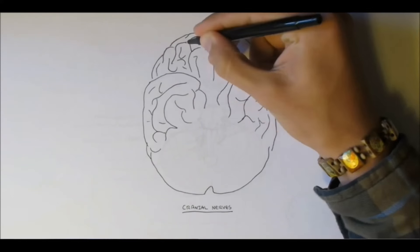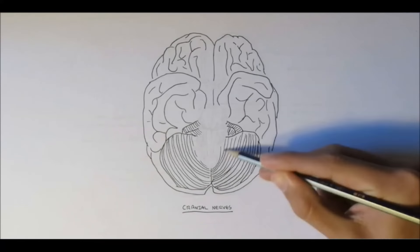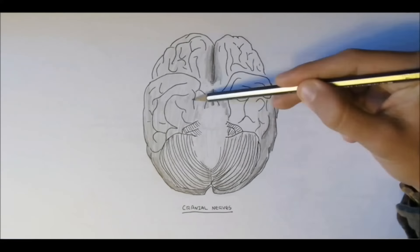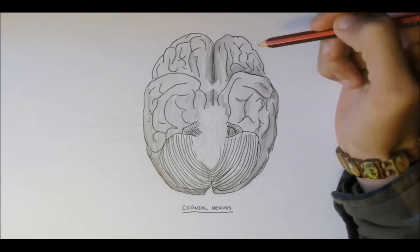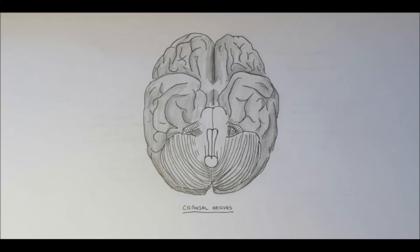So I'm going to draw out a brain, an inferior view of the brain, and you can see the cerebrum and the two hemispheres. And also here is the medulla oblongata and the pons.